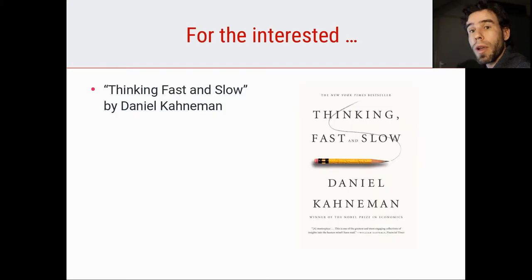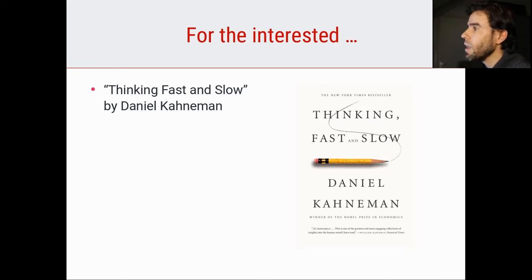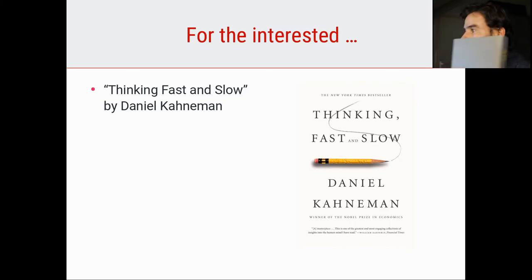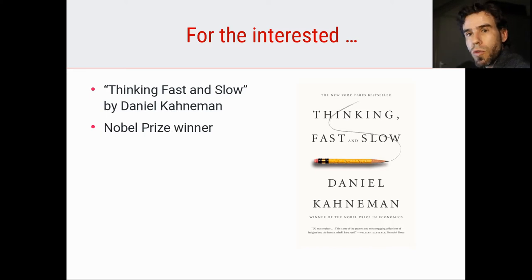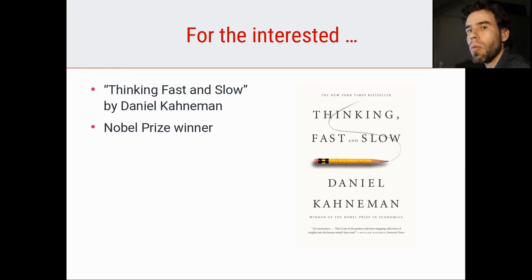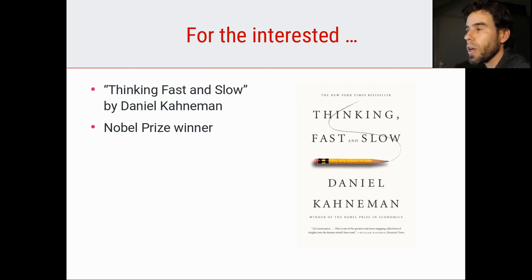I always like to recommend a more accessible textbook for the interested viewer. In this case, I would like to recommend the book Thinking Fast and Slow by Daniel Kahneman. Daniel Kahneman is so far the only psychologist ever to win a Nobel Prize. He won it in the field of economics, because there is no Nobel Prize for psychology, but his work on human factors in economics won him that prize.